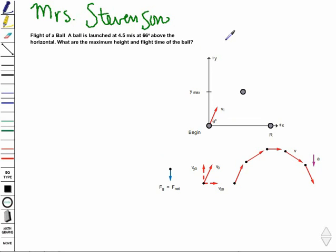We have a diagram that we're going to use to represent the flight of the ball. This is the initial position, this is the maximum height, and then this is the final landing spot. We're going to call the upward direction positive and to the right positive. So the upward is the positive y, and to the right is the positive x.